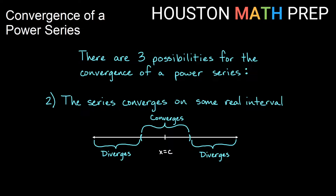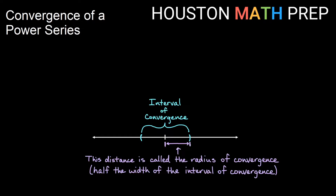Outside of this interval it would diverge. It's possible that the endpoints of the interval will converge, or they may diverge, so we will actually need to check the endpoints and see if our power series converges there. This interval around the center where the power series converges, we call that the interval of convergence.